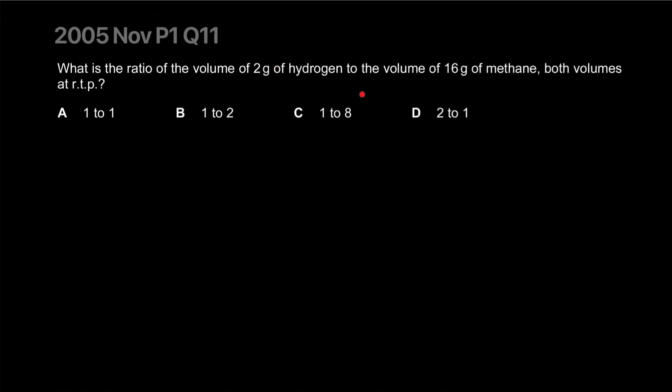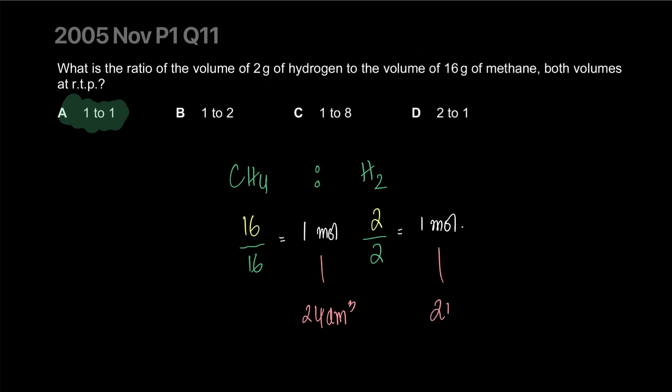What is the ratio of volume of 2 grams of hydrogen to the volume of 16 grams of methane, both volumes at RTP? So we got to compare the moles of this. So CH4 to hydrogen, right? So if this is 2 grams and this is 16 grams, what is their ratio? So divide by the MR, 16 divided by the MR, which is coincidentally the same. That's one, that's one. So one mole, one mole, right? So the ratio of their volume is actually the same because the moles are the same. Both will occupy 24 decimeter cubed.